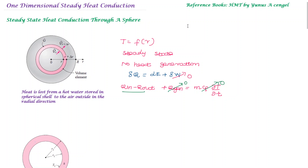We make the same assumptions as before. From the first law of thermodynamics, the heat conduction equation gives us: delta Q equals total energy change plus work done. We can eliminate work done due to temperature changes. So, Q_in plus internal heat generation equals the rate of change of internal energy.